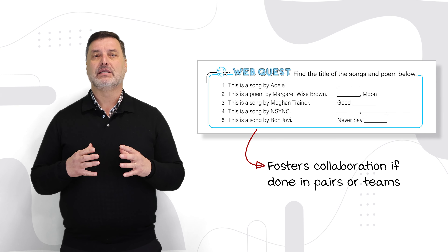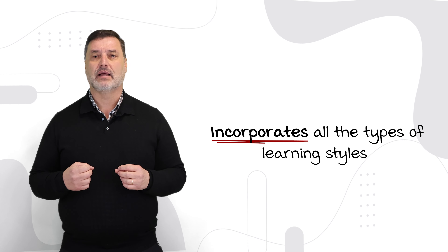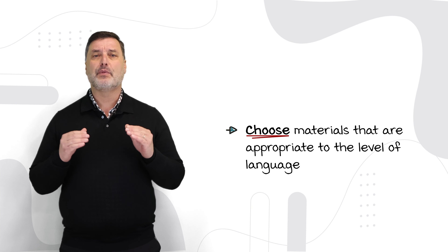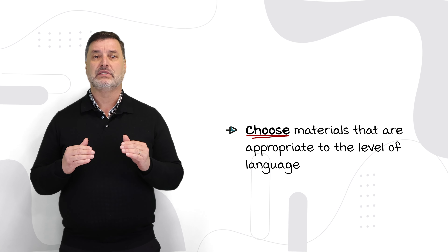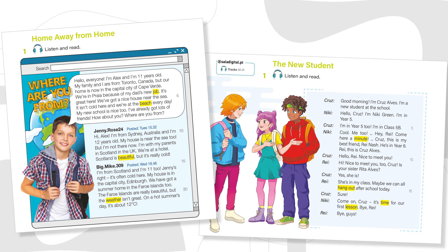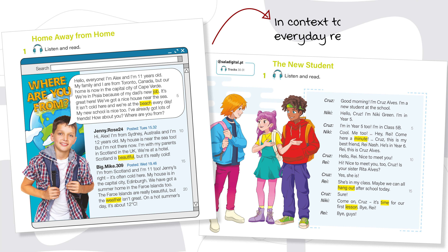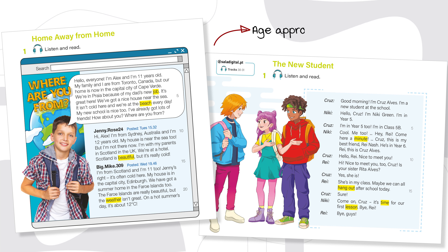Integration of technology is important, and most importantly it incorporates all types of learning styles. The second point is that we must choose materials that are appropriate to the level of language. We're going to look at an A1 level, so texts here have to be very simple with very basic language, in context to their everyday reality, and obviously age appropriate and interesting.